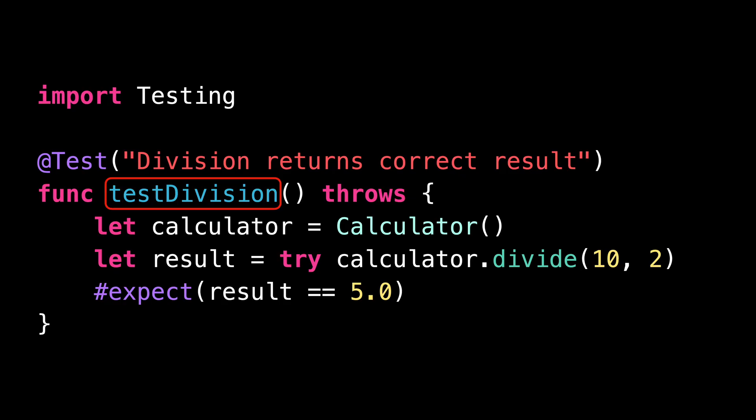And very often, this function name ends up being an average version of the description of the test. That's not great by any means, and it would be really nice if we could avoid having to provide this superfluous function name.